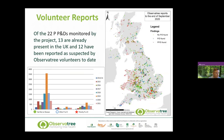Of the 22 priority pests and diseases monitored by the project, 13 are known to be present in the UK, of which 12 have been reported by our volunteers. We're also interested in healthy tree data — these are the priority pests and diseases volunteers have been trained on, plus other pest and disease symptoms of concern they also report. Just before coronavirus kicked off, we were getting a nice steady increase in reports coming in and we hope to bring those numbers back up.